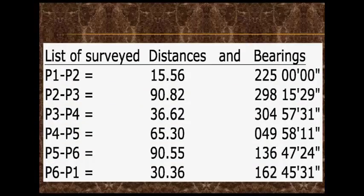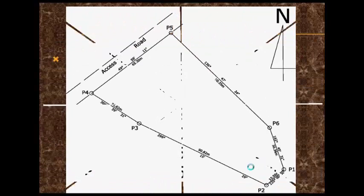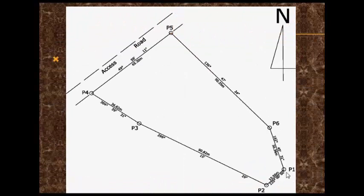We have a list of bearings and distances linking 6 surveyed points — from point 1 to 2, 2 to 3, 3 to 4, 4 to 5, 5 to 6, and 6 back to 1. Our distances are in meters, while our bearings are in degrees, minutes, and seconds. At the end of this video, we are going to be plotting this surveyed area using the bearing and distance method in AutoCAD.